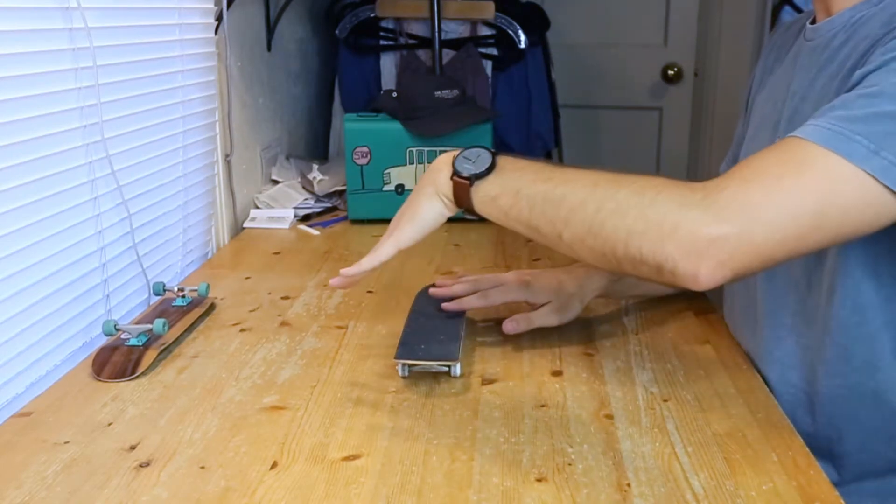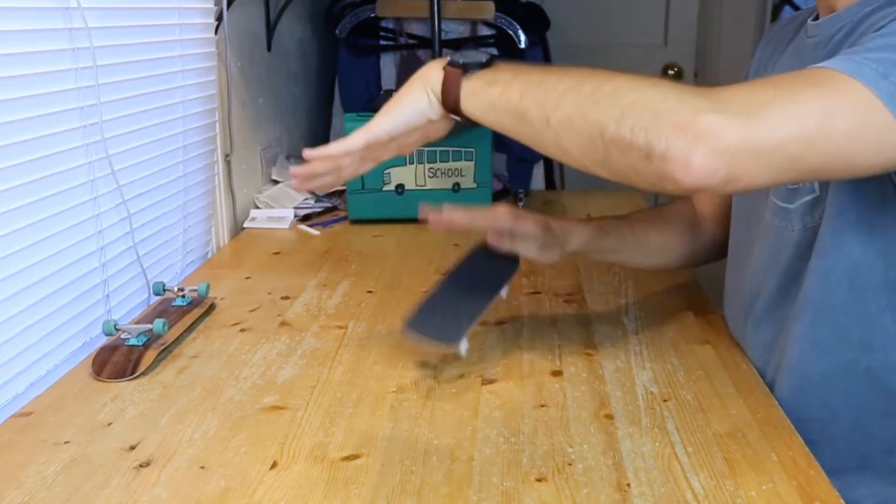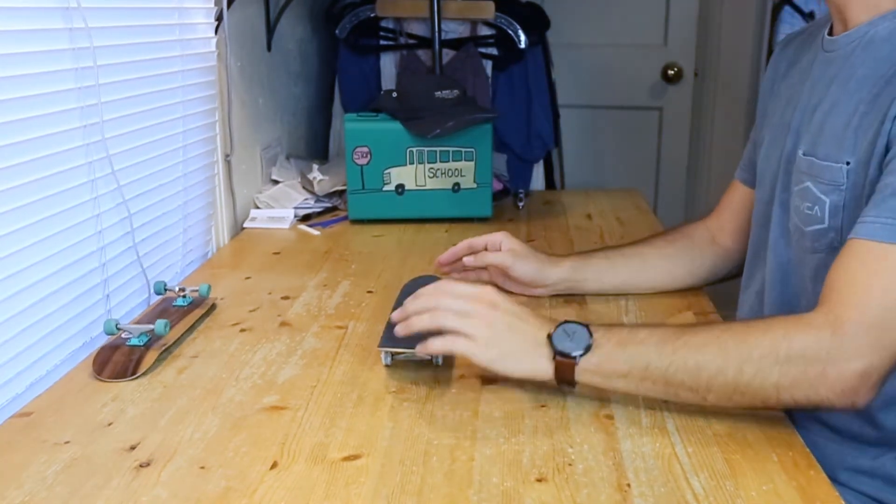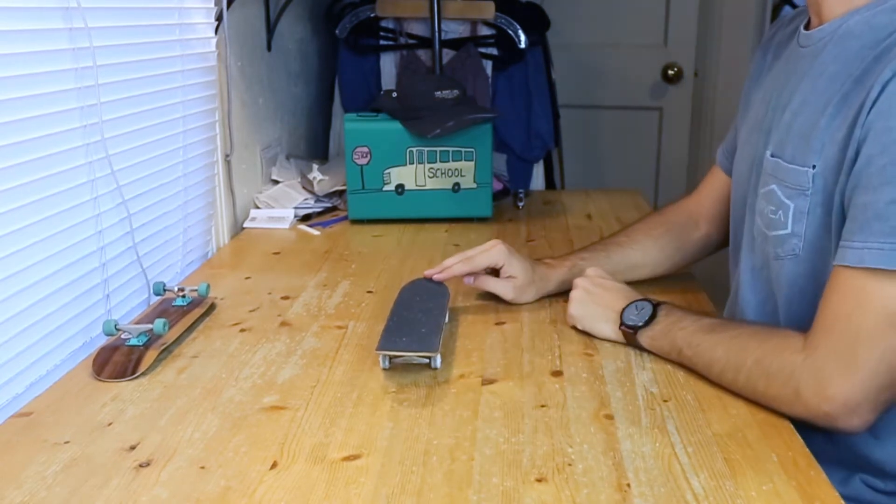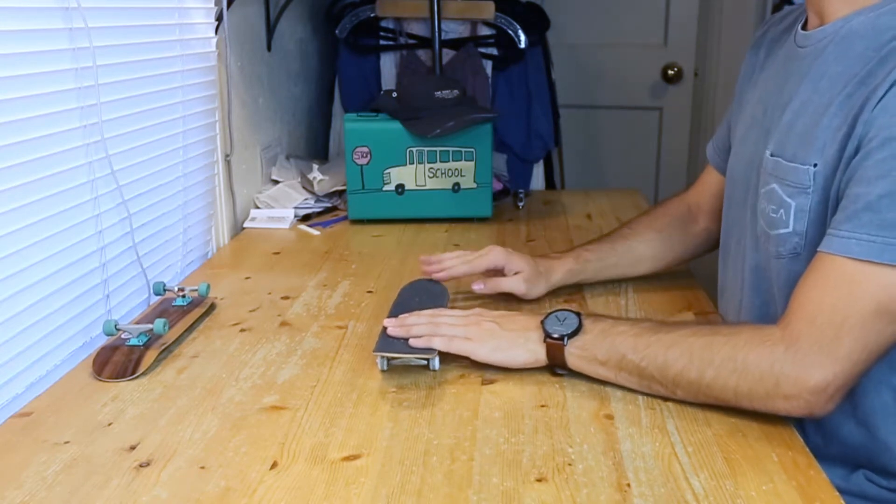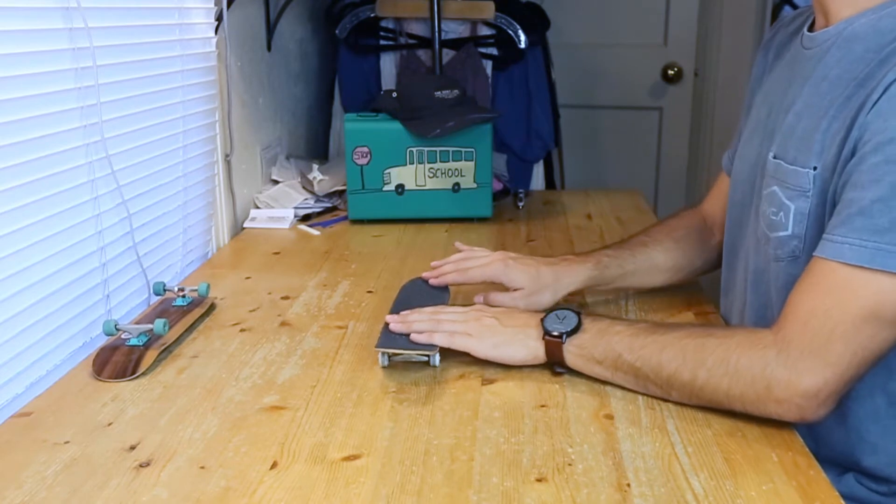So that is a heel flip broken down to its two components: the pop and the flip. Let's talk about the backhand a little bit more. A lot of people pop with two fingers, and while that works, there's not a lot of solid power in my opinion that comes from a two-finger pop.